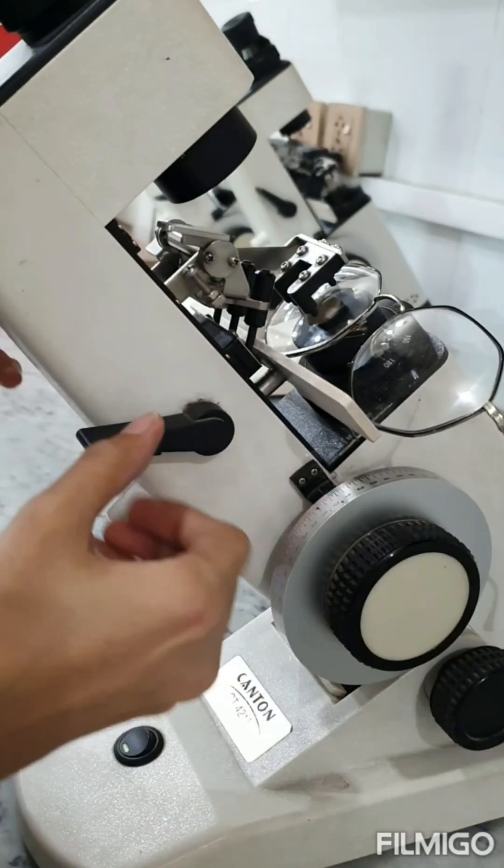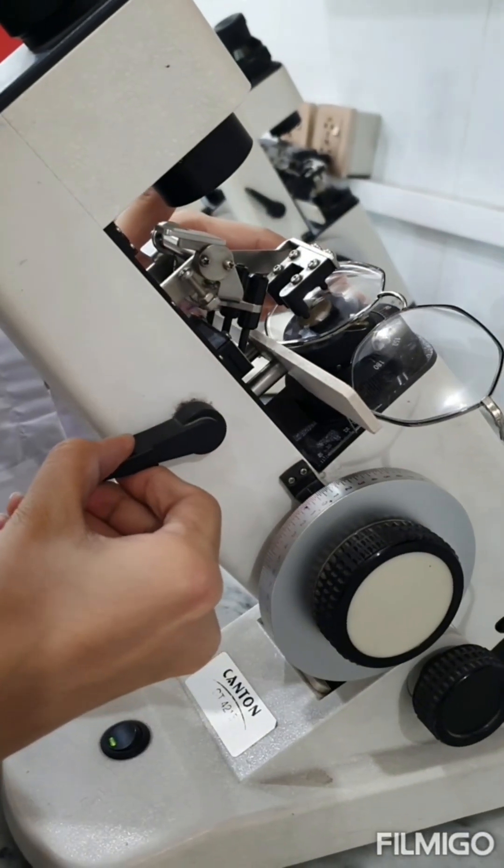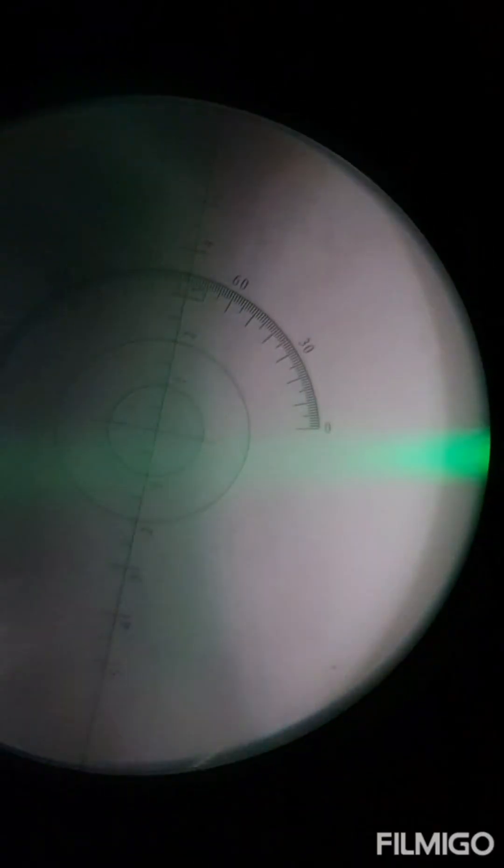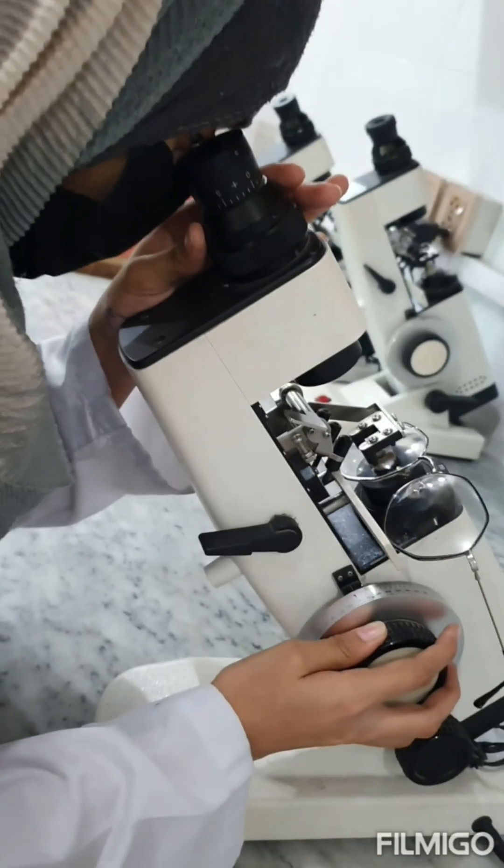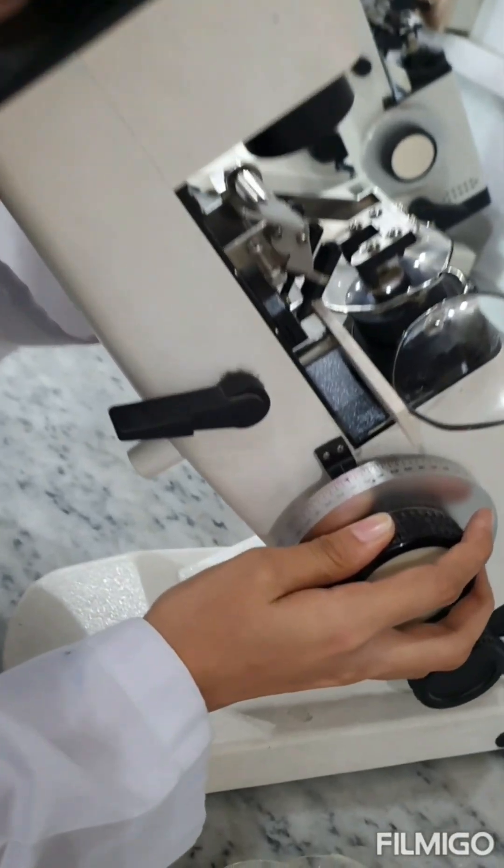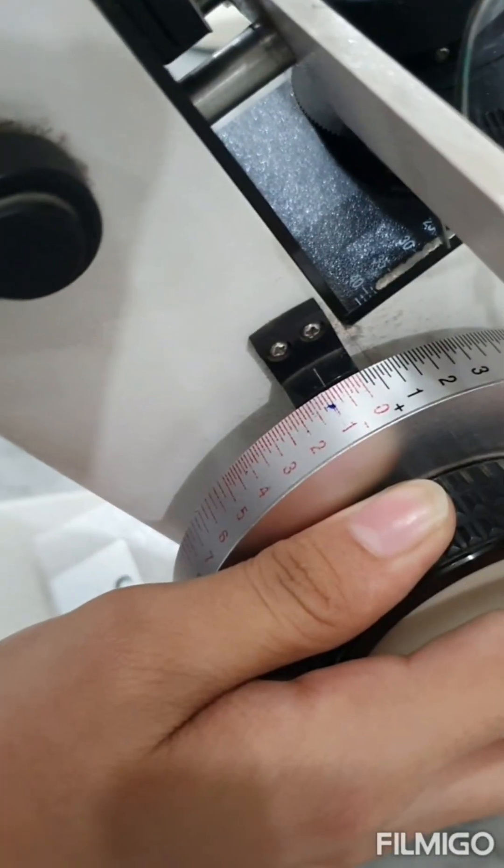After placing a cylindrical lens, we noted that the target is blurred. Rotate the power drum such that any one meridian along with the central dotted mires becomes bright and slightly clear as compared to other meridians.